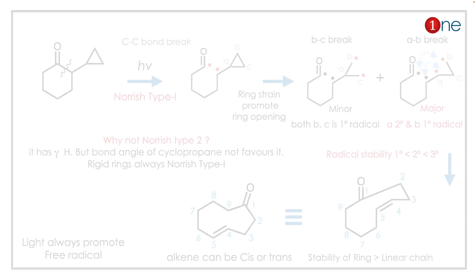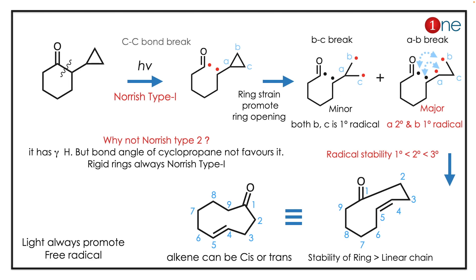By looking at the carbonyl and light, you might imagine it's a Norrish Type 1 reaction. Norrish Type 2 reaction is not possible because of the rigid gamma hydrogen — gamma hydrogen donation is not possible. So the Norrish Type 1 reaction proceeds.